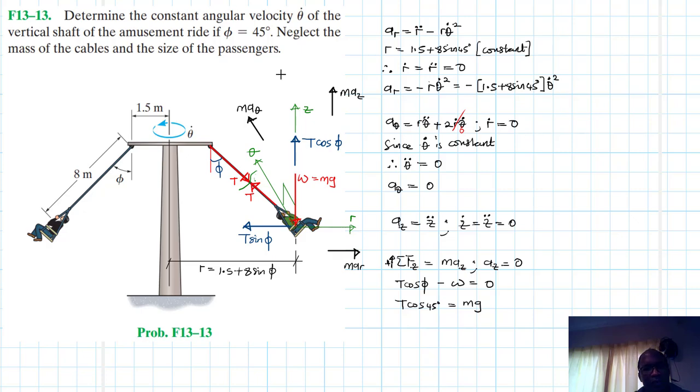Therefore, T cos 45 is just equal to M G. Okay. Right. There we go.